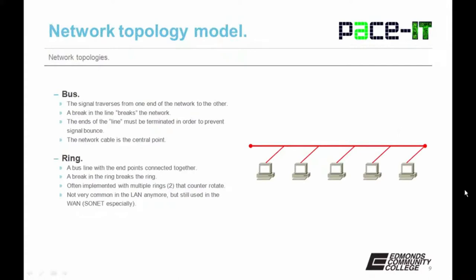In a bus topology, the signal traverses from one end of the network to the other. A break in the line breaks the network. The ends of the bus line needed to be terminated in order to prevent signal bounce. If there was a break or the ends of the line were not terminated, when the signal got to the end it would bounce back through and create a storm. In a bus topology, the network cable is the central point.